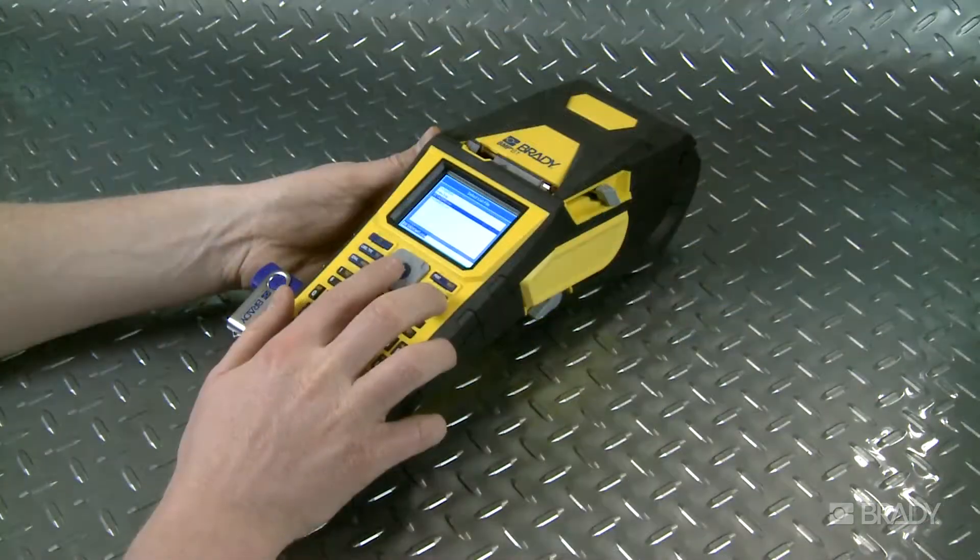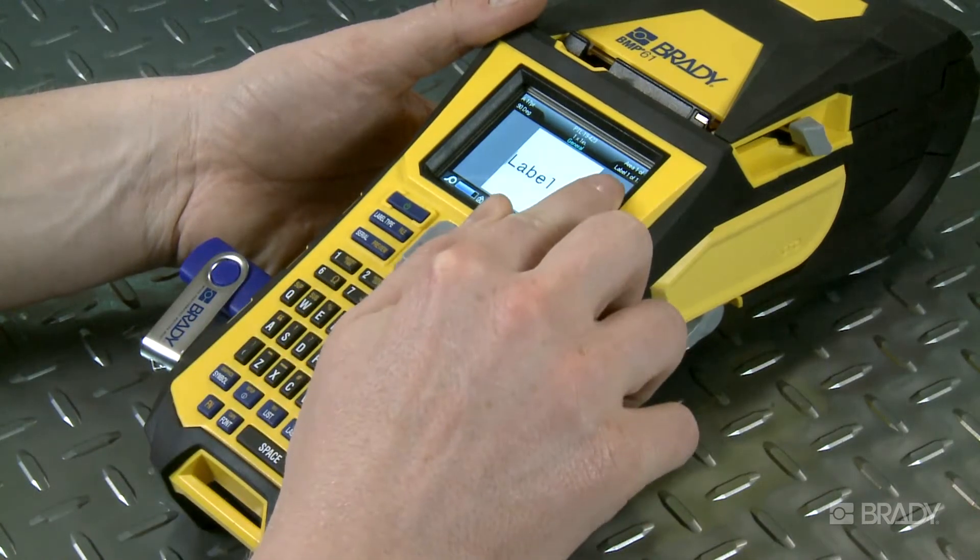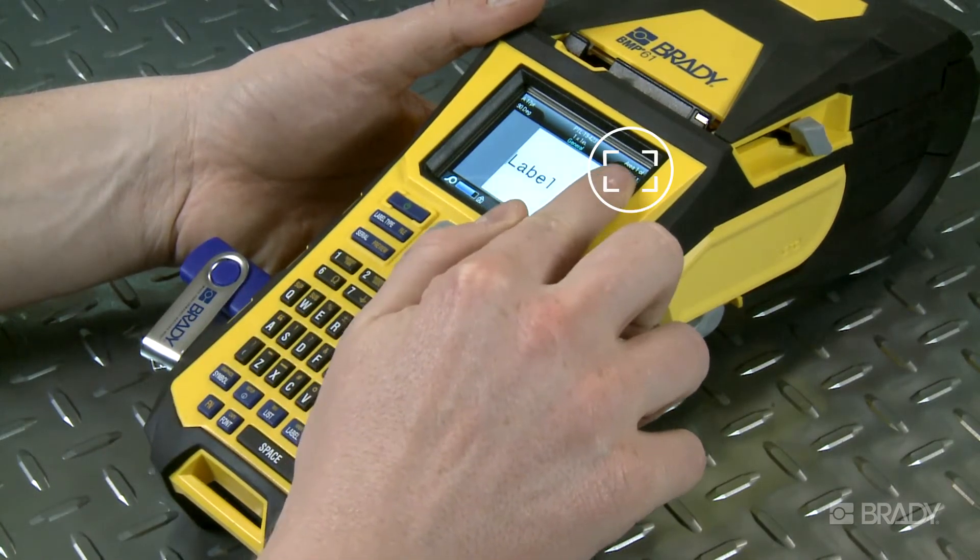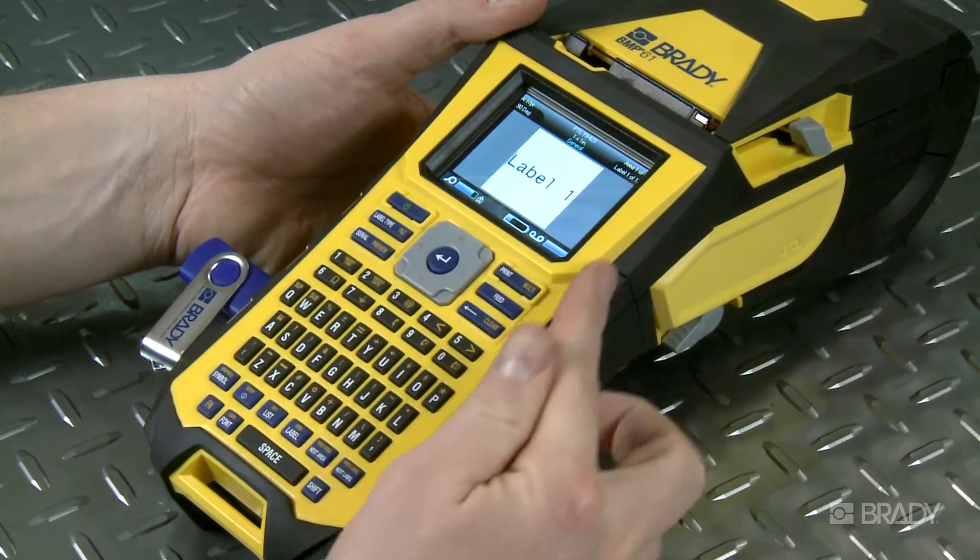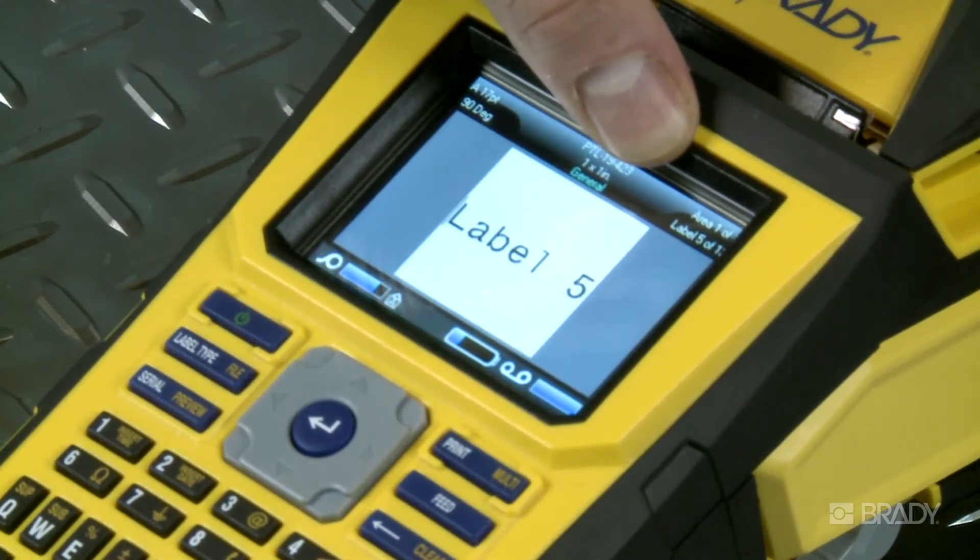Select the desired file from the list. Check the top right corner of the screen. Notice that there is one area and one of 12 labels shown. Press the Next Label button to scroll through all the labels to check for the correct content.